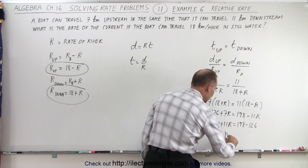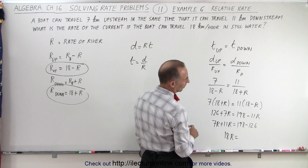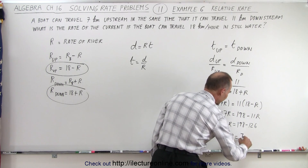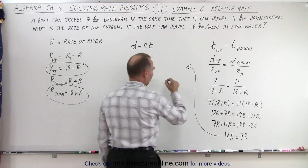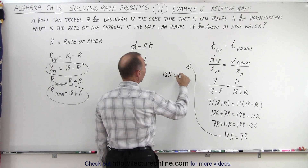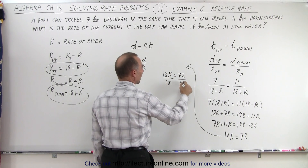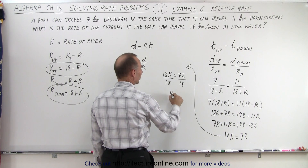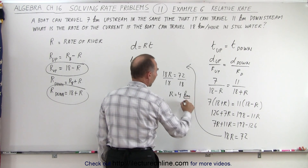Moving all the r terms to one side: 7r plus 11r equals 198 minus 126, so 18r equals 72. Dividing both sides by 18, we get r equals 4 kilometers per hour.